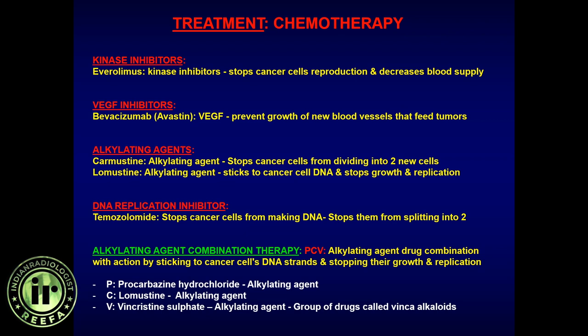The most frequently heard drug names from oncologists are Avastin, temozolomide, lomustine, and procarbazine. Alkylating agents act by adding methyl groups, and their effectiveness depends on MGMT promoter methylation status — whether the gene is hypermethylated or unmethylated determines whether the DNA will respond to treatment. For radiologists, these details matter most in interdisciplinary conferences.